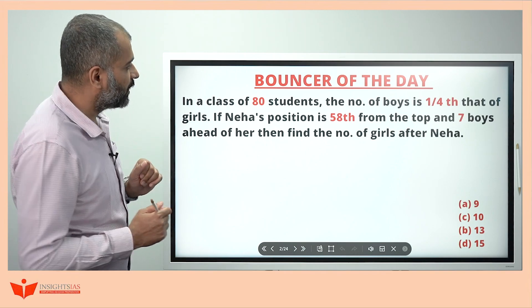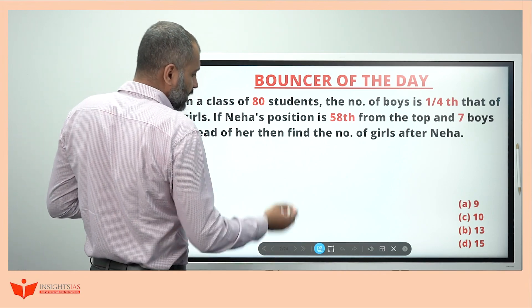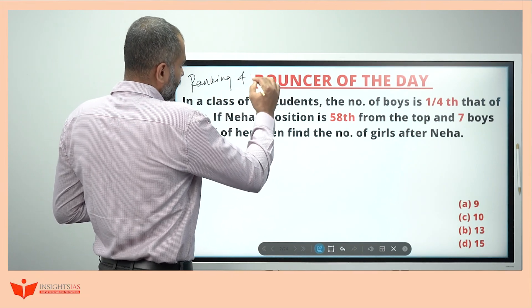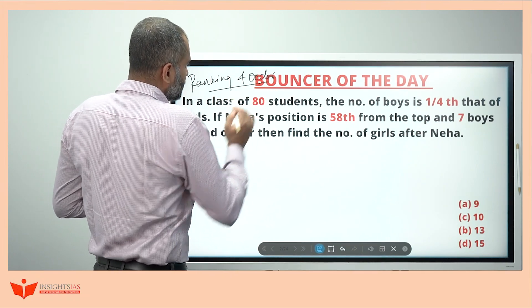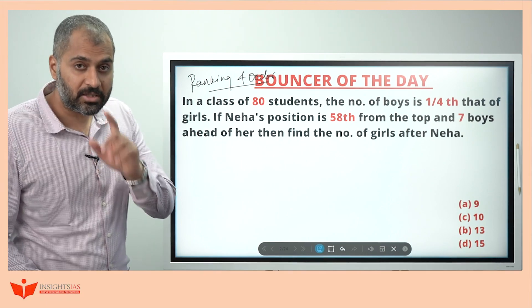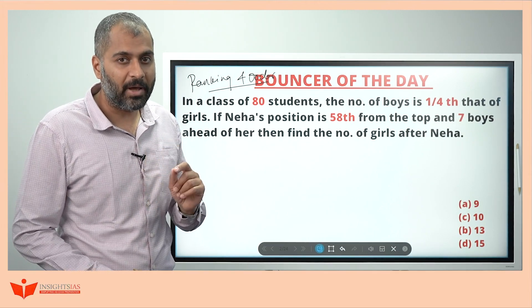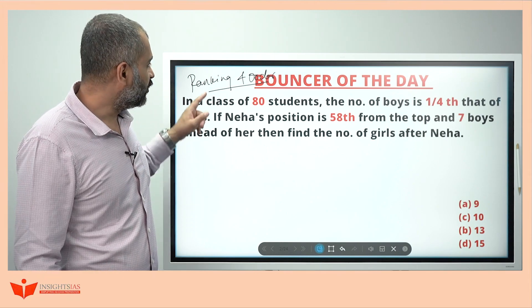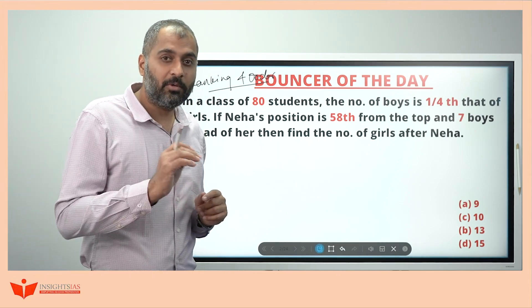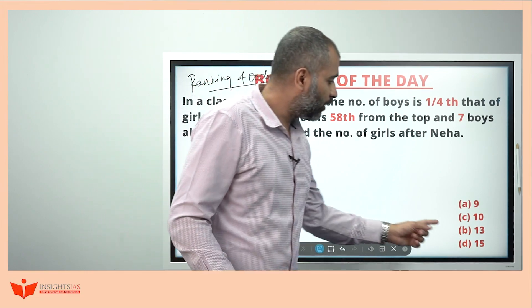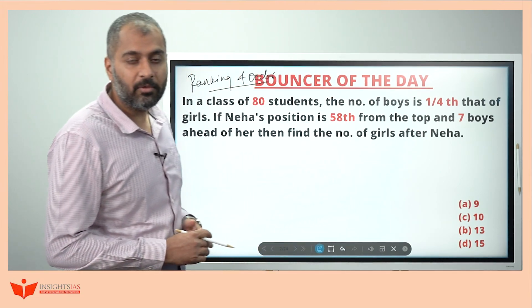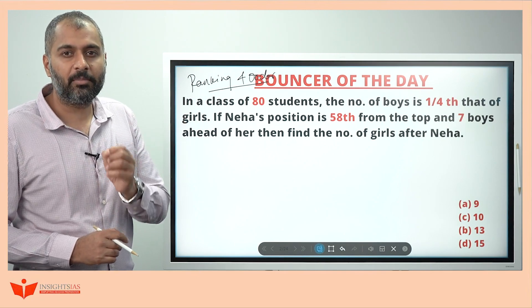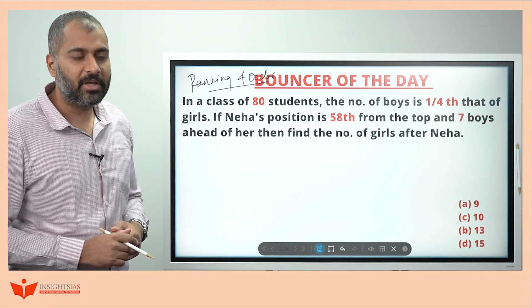This question is taken from the topic ranking and order. In this kind of question, the key is to understand the question properly. If you misunderstand, most of the time you will make a mistake — and whatever mistake you make will appear as an option. Because if you misinterpret even one position, you will end up making a mistake.